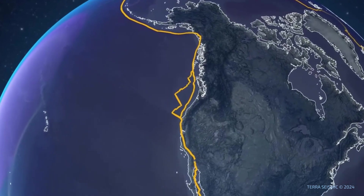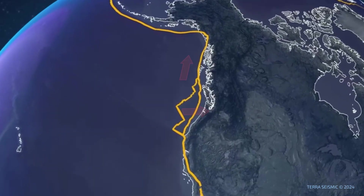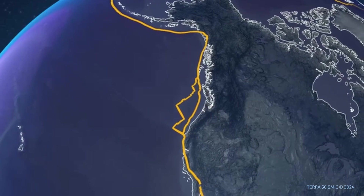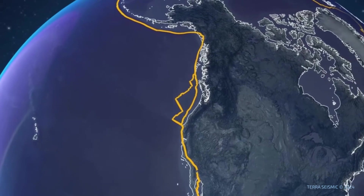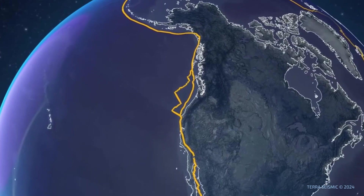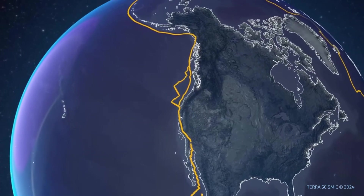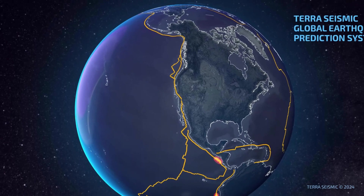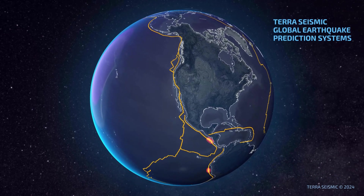Oblique boundaries form when plates move diagonally relative to each other, resulting in both shearing and either compression or extension of the crust. To explain how earthquakes are prepared, let's consider a simplified model based on transform plate boundaries.